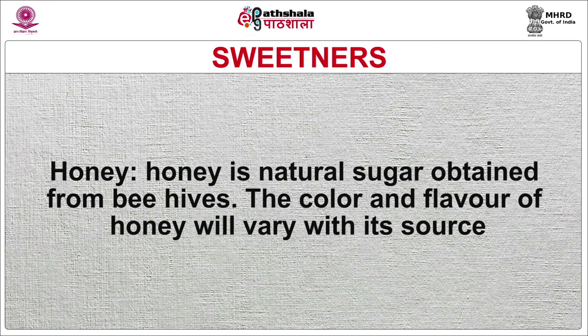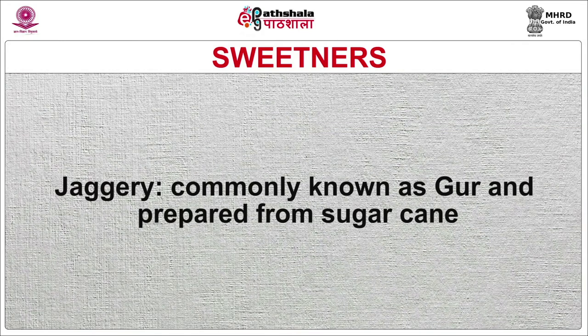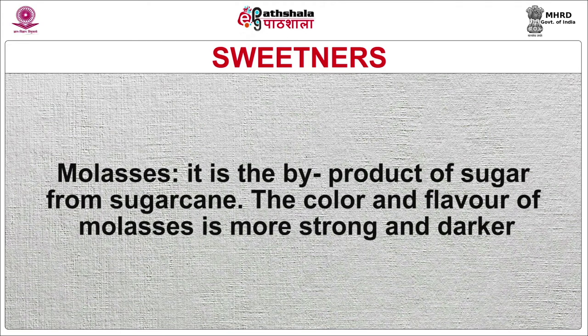Honey is a natural sugar obtained from beehives; the color and flavour of honey will vary with its source. Date sugar is very sweet in nature and obtained by drying and pulverizing dates. Palm sugar is traditionally made from the sap of the palmyra palm or the date palm and is extensively used in Asian cooking. Jaggery, commonly known as gourd, is prepared from sugar cane. Molasses is the by-product of sugar from sugar cane; its color and flavour are stronger and darker. Liquid glucose is obtained by treating corn slurry with acid, a process known as hydrolysis; it contains dextrin gum which retards the crystallization of sugar.